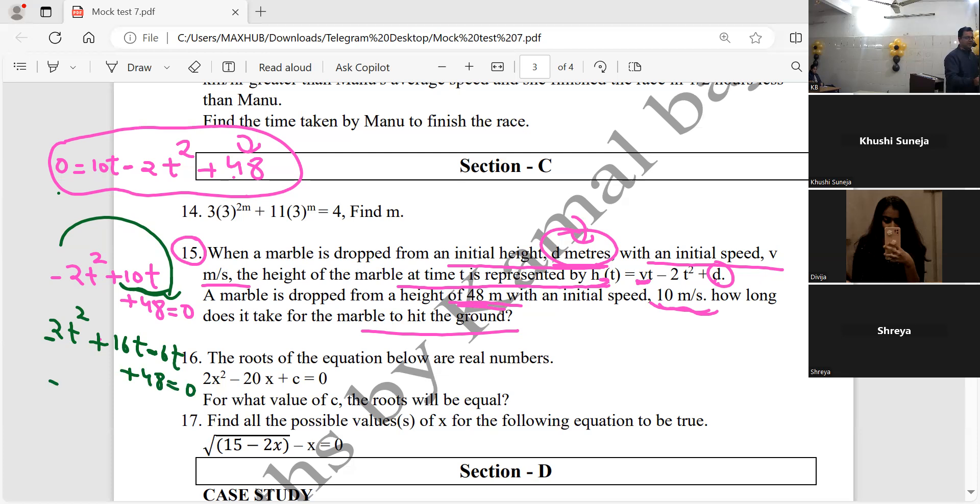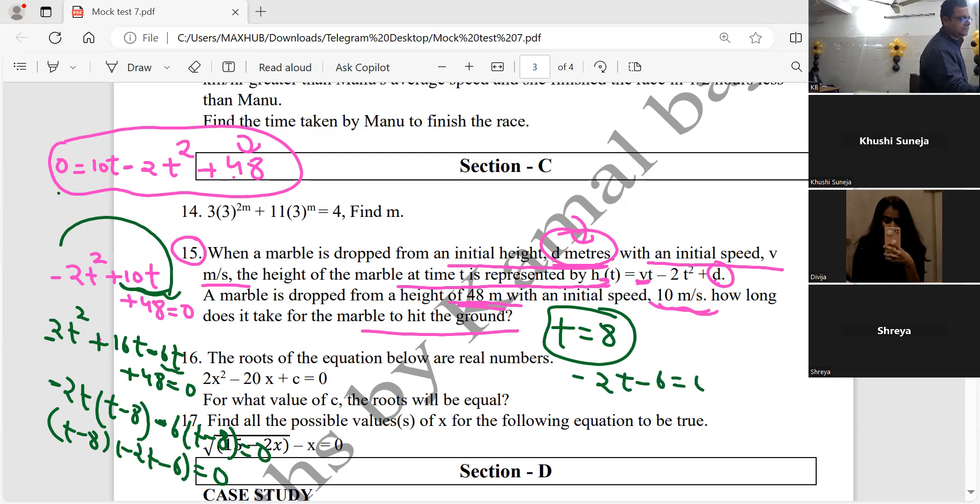Now, tell me what the factorization is. If I take minus 2 common, what will it be? If I take minus 2 common, we get t square minus 5t plus 24.